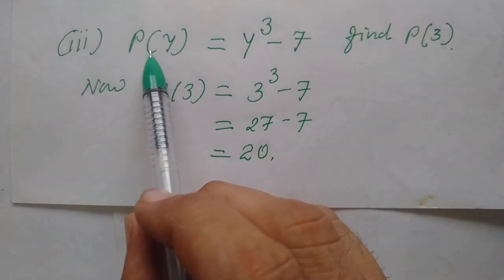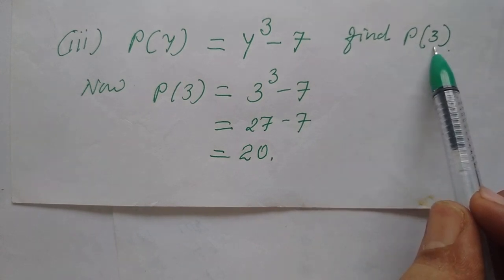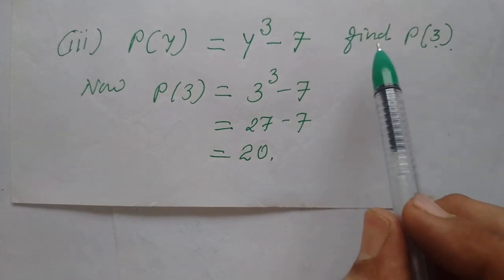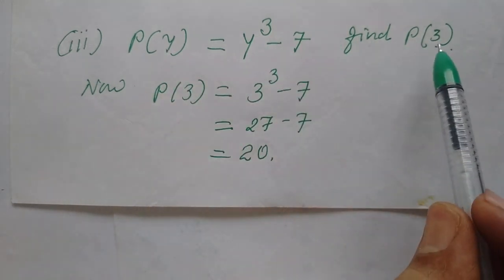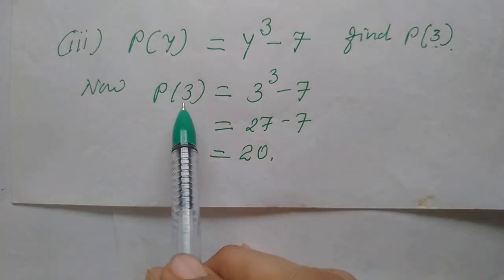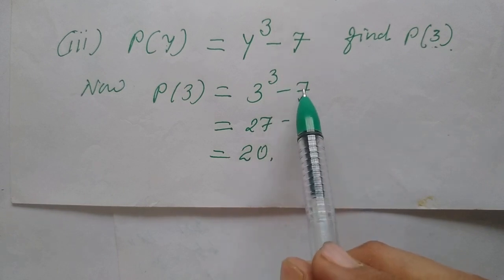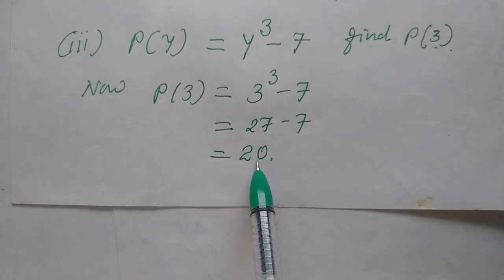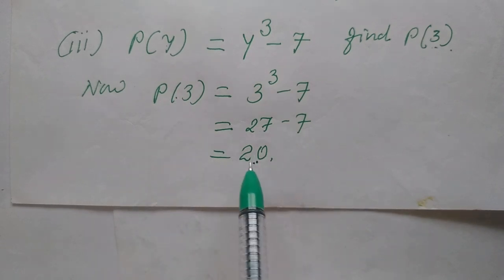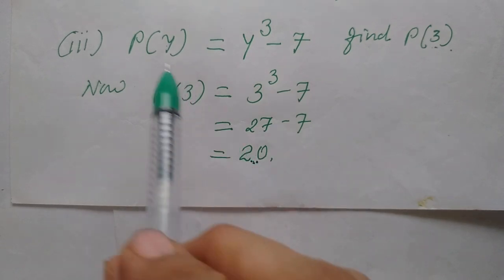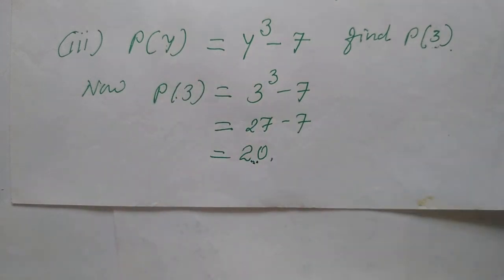p(y) equal to y cubed minus 7. Find p(3) — meaning find the value of this polynomial at y equal to 3. Replace y by 3: 3 cubed minus 7 equals 27 minus 7 equals 20. So p(3) equal to 20, or you can say 20 is the value of p(y) at y equal to 3.